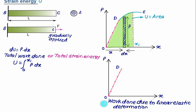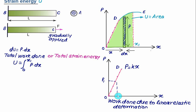For linear elastic deformation, force P is directly proportional to x and given as P = Kx. If the force is equal to P₁, the corresponding deformation equals x₁. The area under the diagram represents the total work done — also called strain energy — and this area equals one-half of P₁ multiplied by x₁.